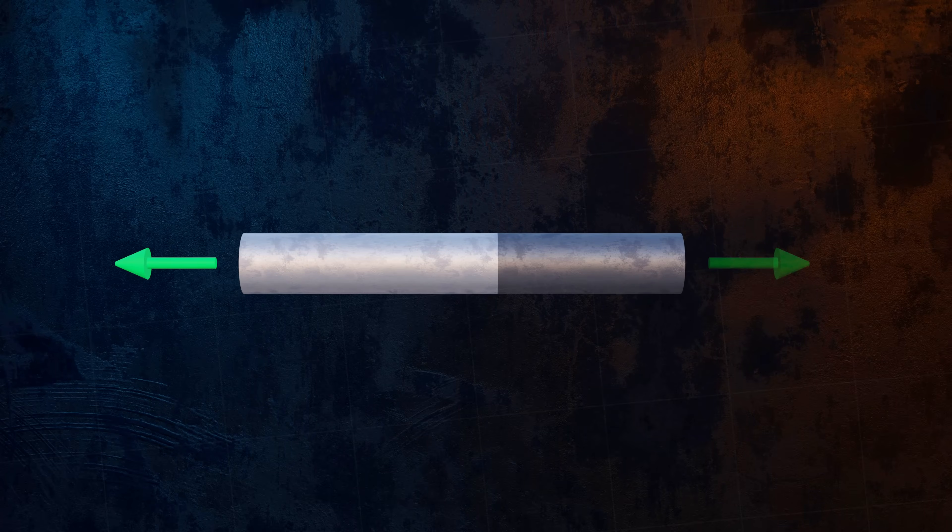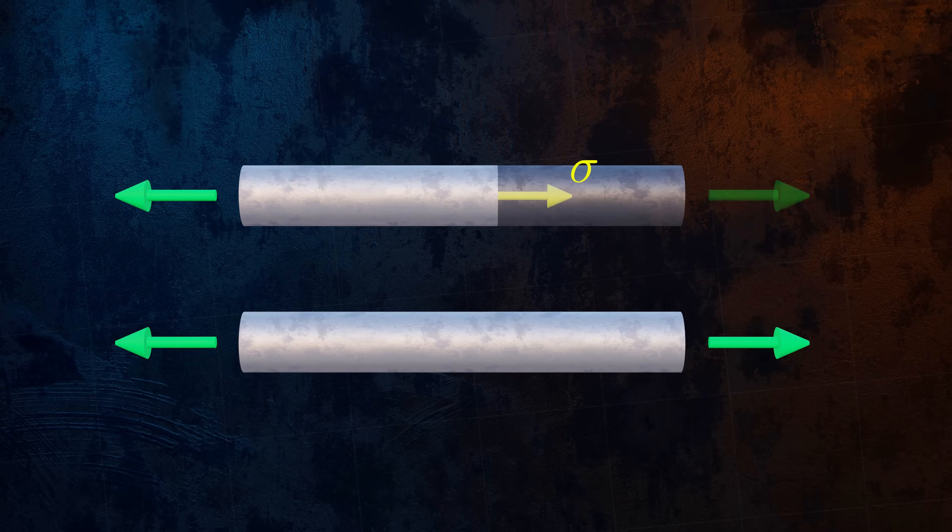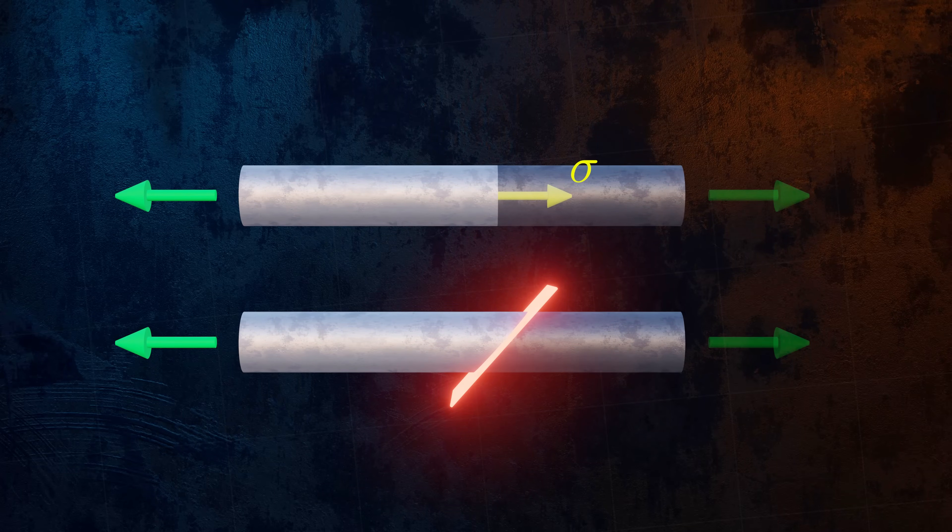In our bar with uniaxial loading, the plane we used to make the imaginary cut was perpendicular to the axis of the bar, and so we had normal stresses but no shear stresses. If we instead use an inclined plane to cut the bar, we will have both normal and shear stress components.